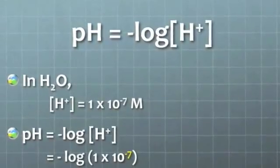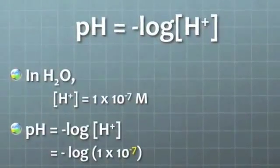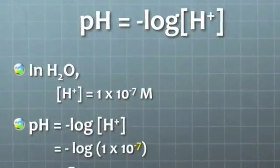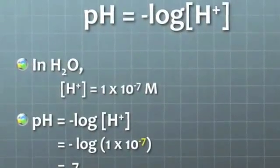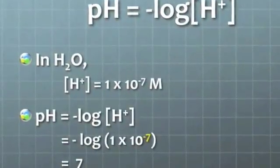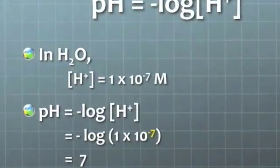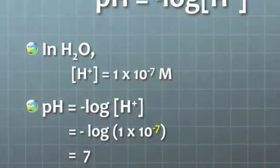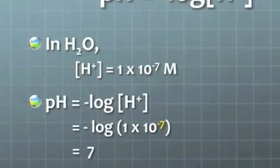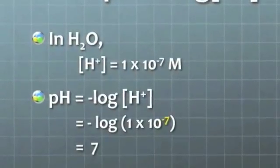The pH of water is found by taking the negative logarithm of the molar concentration of H-plus. So in water, the concentration of H-plus is 1 times 10 to the negative 7th molar, and the pH would be 7 because that's the negative logarithm of 1 times 10 to the minus 7th.